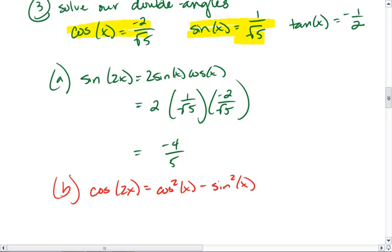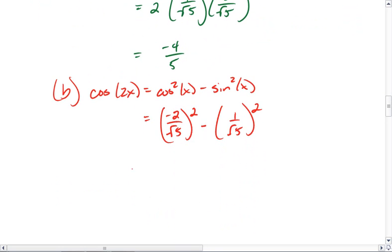Again, going up here, I know that my cosine is negative 2 over rad 5, and we're going to square that, minus 1 over rad 5 squared. I get 4 over 5 minus 1 over 5, which equals 3 fifths. There's my cosine double angle.